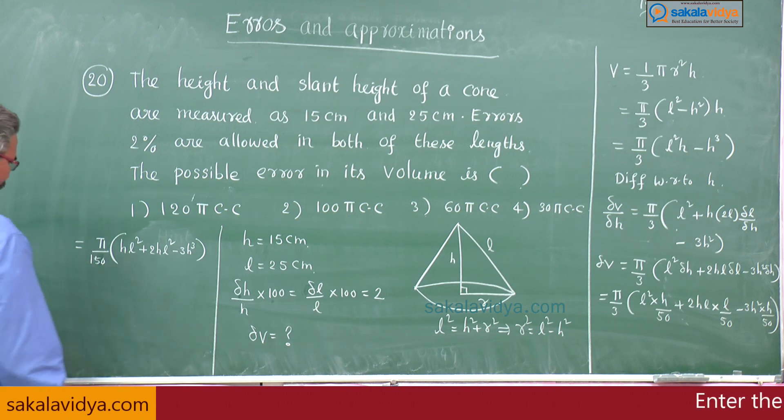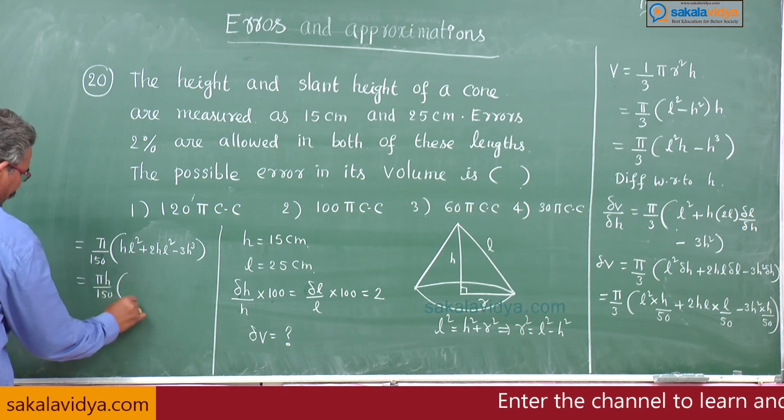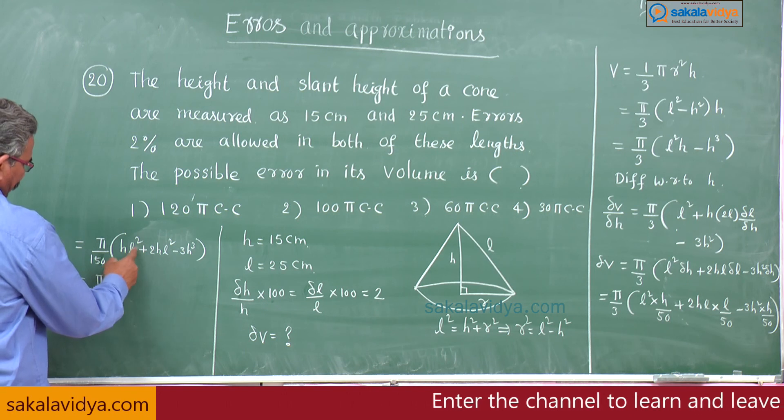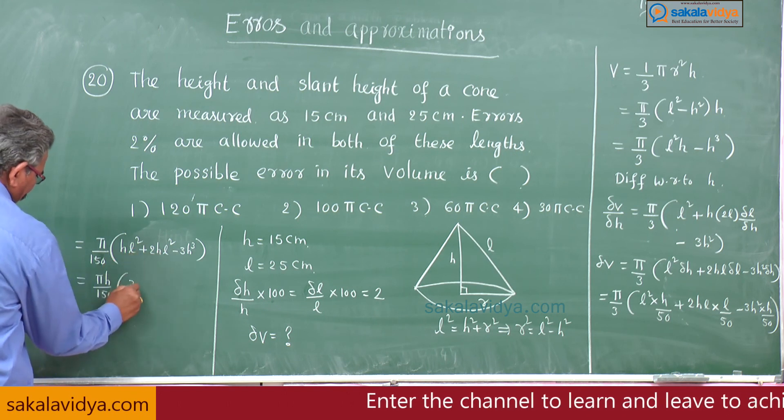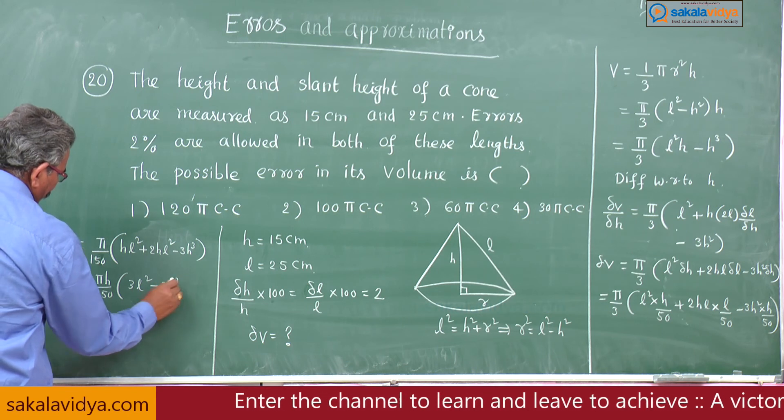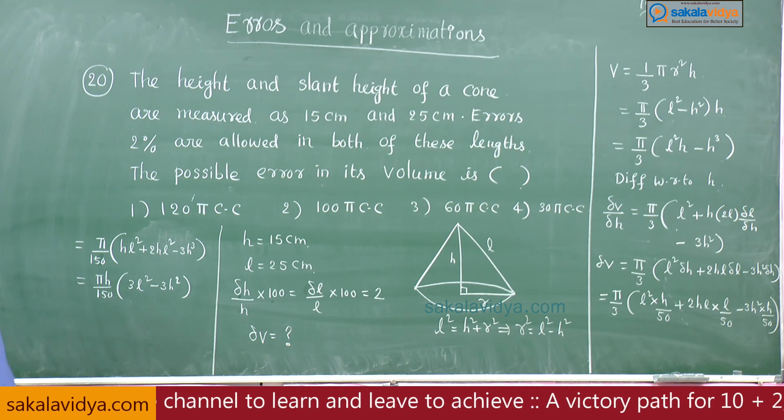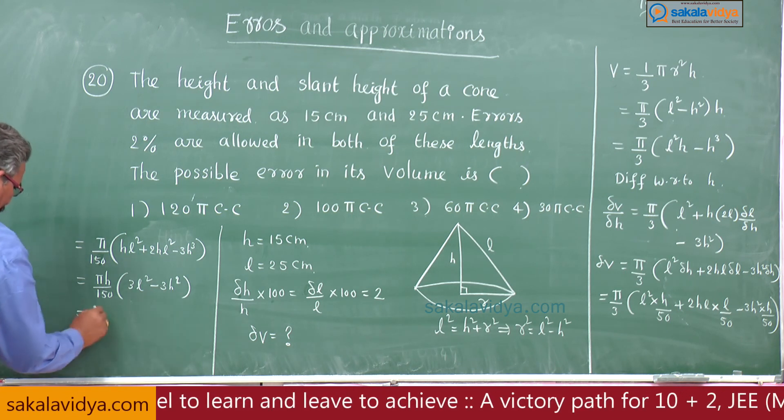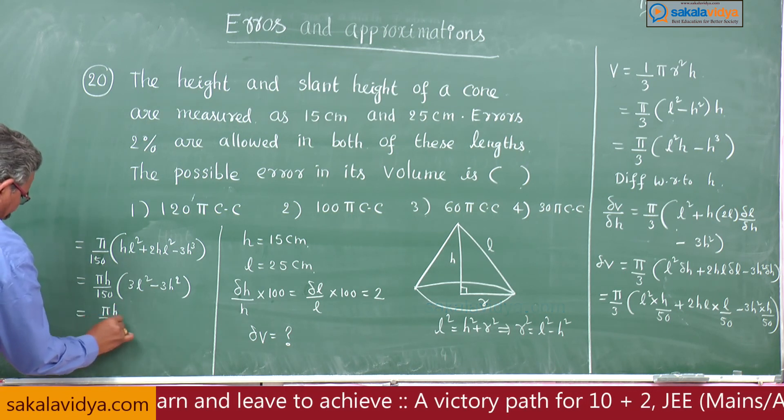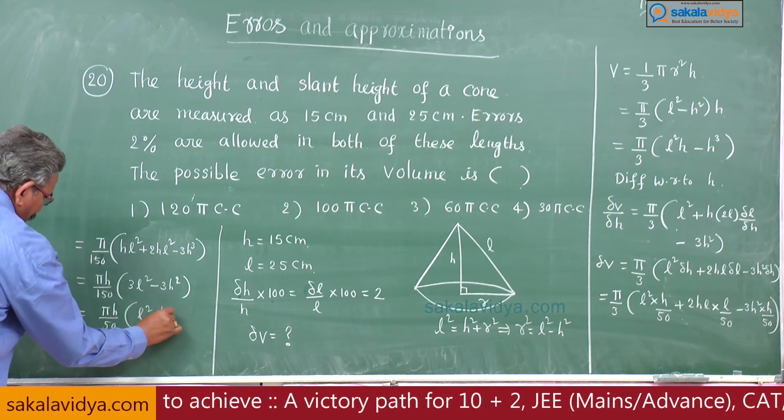You can take h common: πh by 150, l square plus 2l square equals 3l square minus 3h square. Substituting 3 common: πh by 50 into l square minus h square.